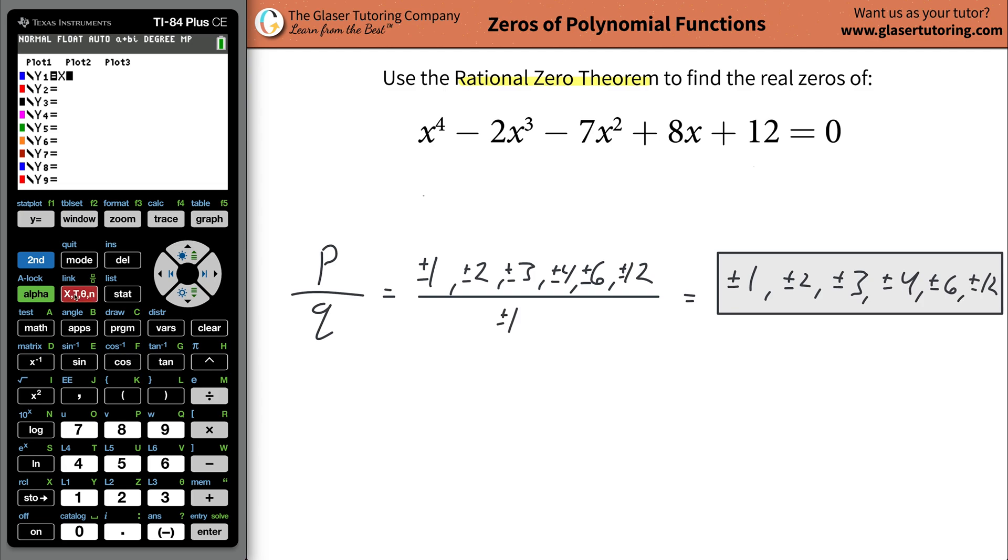So what I'm going to do is I'm going to plug in this function. So x raised to the fourth, then minus two x raised to the third, then minus seven x squared, then plus eight x, and then plus 12. And what I'm going to do is I'm going to graph this thing. And I might be zoomed in a little bit too much. So let me zoom out. That's not a good sign. Where the hell's the graph? Let me zoom out again. Oh, there it is.